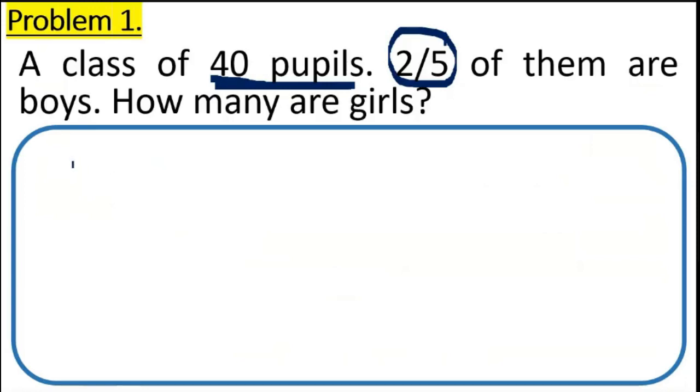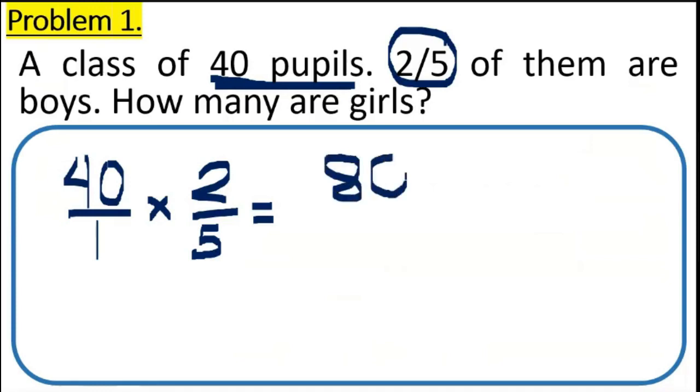We're going to first multiply 40 pupils by two-fifths para malaman natin kung ilan yung bilang ng boys. So what is this? 40 over 1. Ma'am, bakit 40 over 1? Always remember that the denominator of a whole number is always 1. So we're going to multiply this with 2-fifths. Why do we need to multiply? In order to find out the number of boys in the class. So, 40 times 2, we have 80. And then, 1 times 5 is 5. And then, we need to simplify our answer.